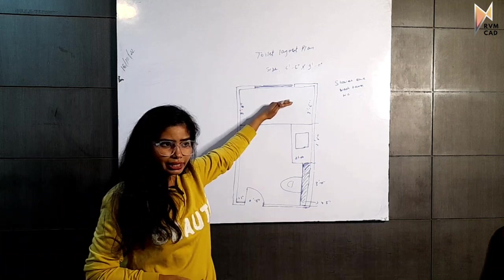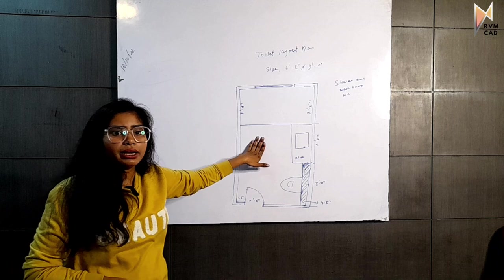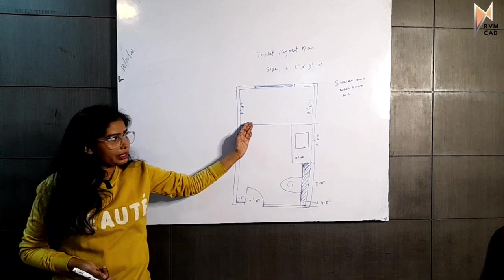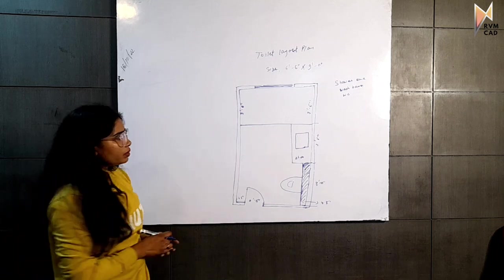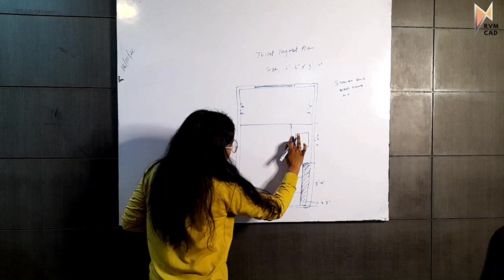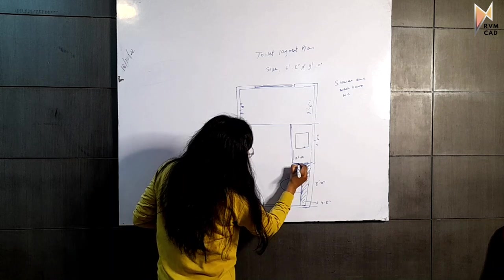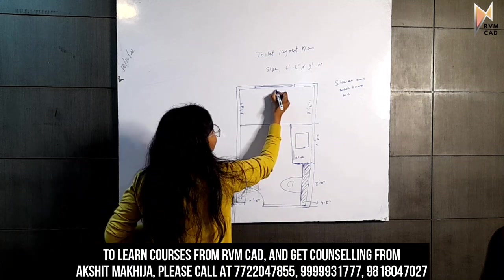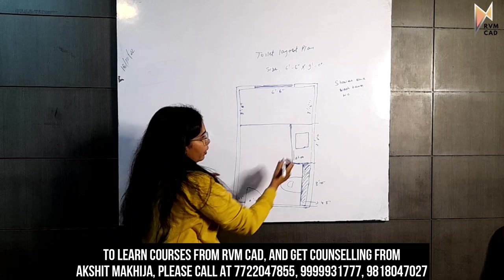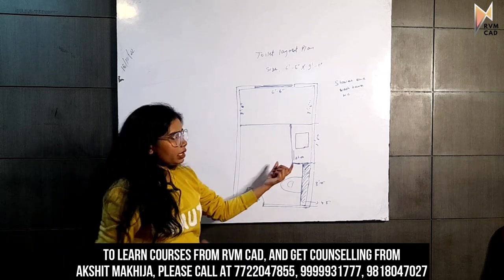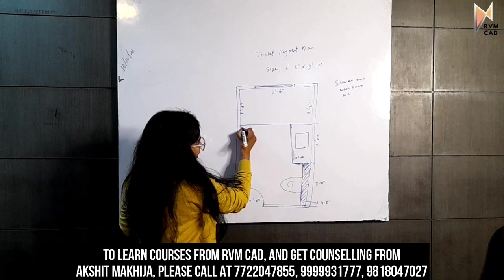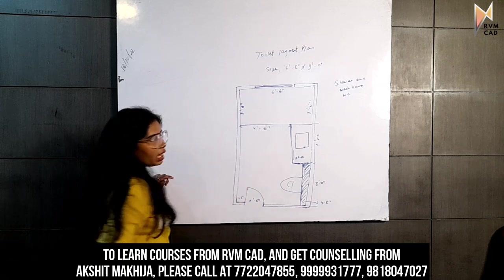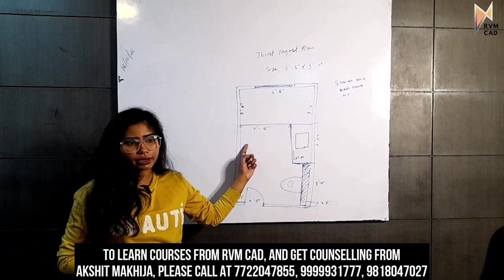We have placed the toilet fixtures in this area. This area is 6 feet 6 inches, and as I have told you, the width of the counter is 2 feet, so you can see that 4 feet of your area is available.